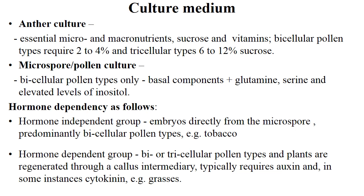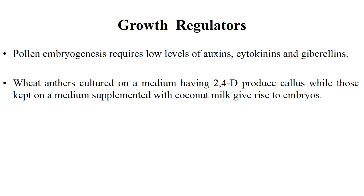Hormone dependency: in the hormone-independent group, embryos directly form from the microspore, predominantly bicellular pollen types, e.g. tobacco. In the hormone-dependent type — bicellular or tricellular pollen types — plants are regenerated through a callus intermediary, typically requiring auxin and in some instances cytokinin, e.g. grasses. The important growth regulators used in in vitro culture are low levels of auxin, cytokinin and gibberellins.